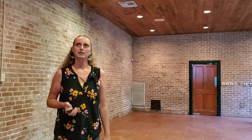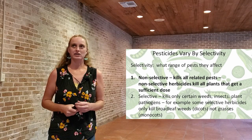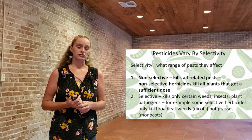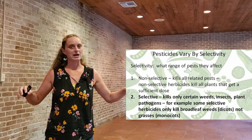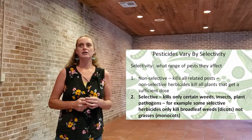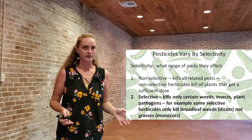Pesticides vary by selectivity. Non-selective pesticides kill all related pests — non-selective herbicides kill all plants that get a sufficient dose — whereas selective pesticides kill only certain target weeds, insects, or plant pathogens. They're very specific, so you can spray them and they will only kill the pests you target. For example, some selective herbicides only kill broadleaf weeds, so you can use them in a lawn and they won't kill your grass. That's a pretty common one we use here in New Orleans.